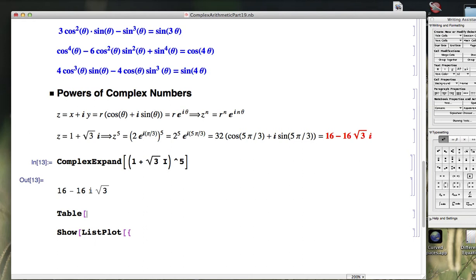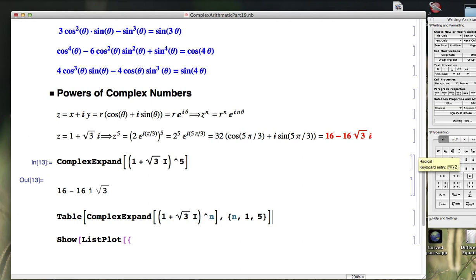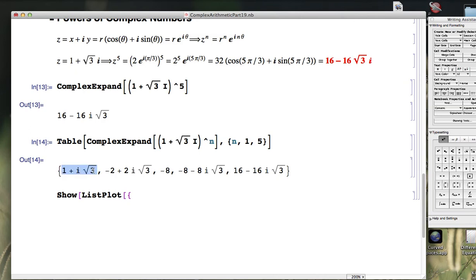Table command creates lists. The list I want to make is a list of these powers of 1 plus square root of 3i. We're going to look at 1 plus square root of 3 times i to the nth power, where n is going to range from 1 to 5. Table automatically assumes you want to go up by integer values of n unless you specify otherwise. We're going to plot this entire list with list plot.